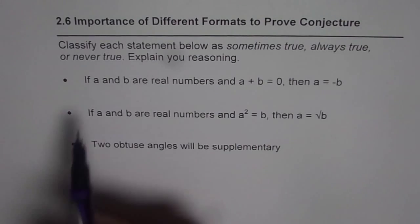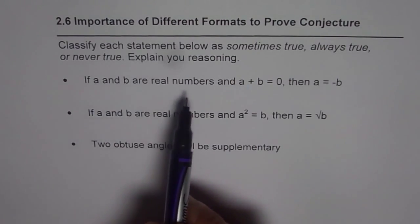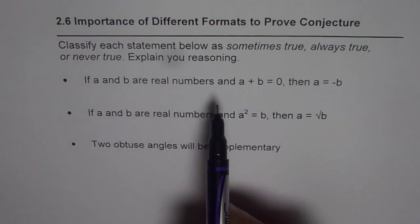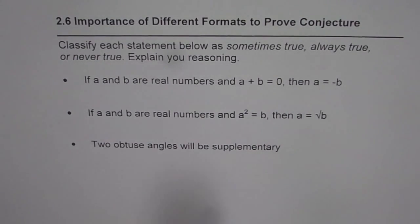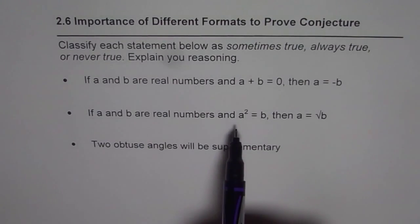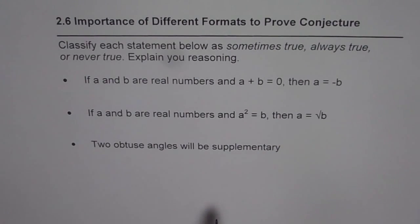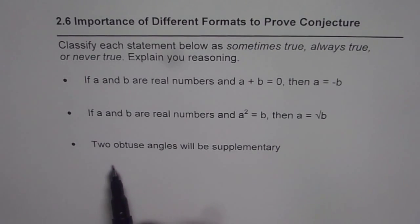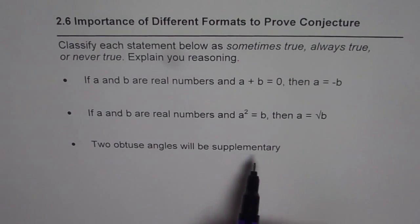We have three different statements here. The first one is: if A and B are real numbers and A plus B equals zero, then A equals minus B. The second is: if A and B are real numbers and A squared equals B, then A equals the square root of B. The third one is: two obtuse angles will be supplementary.